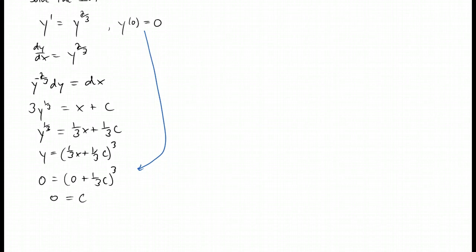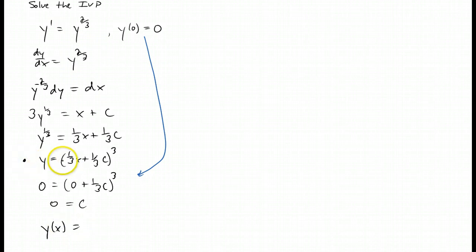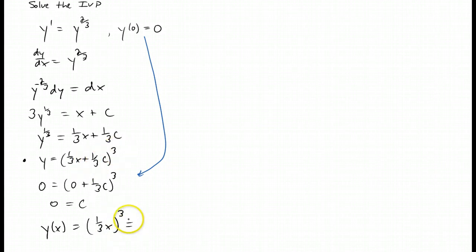So the solution to this initial value problem is y of x equals one-third x, the quantity cubed, plus zero, the quantity cubed. You can rewrite that as one over 27 — that's three cubed — times x cubed. Either one of those answers is fine.